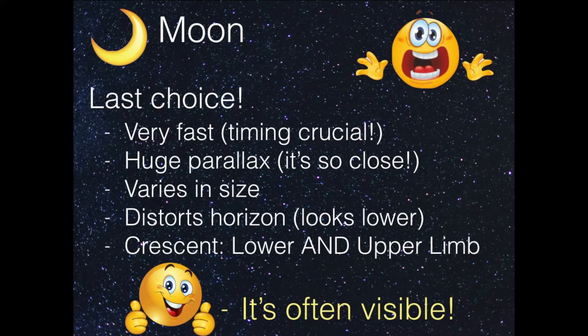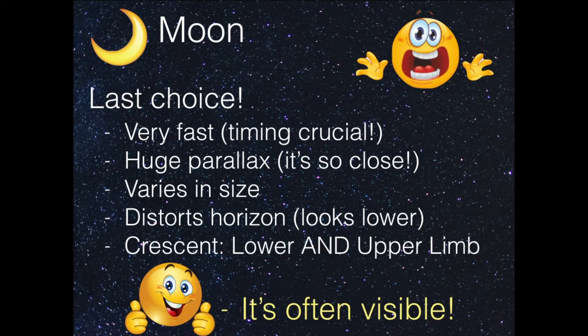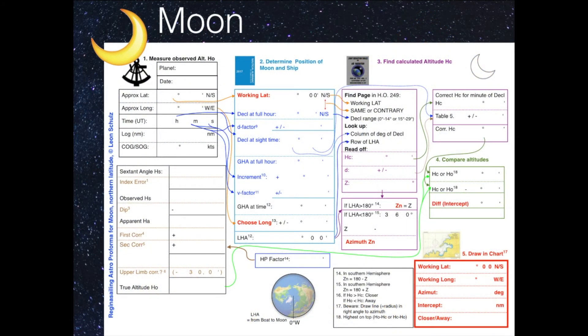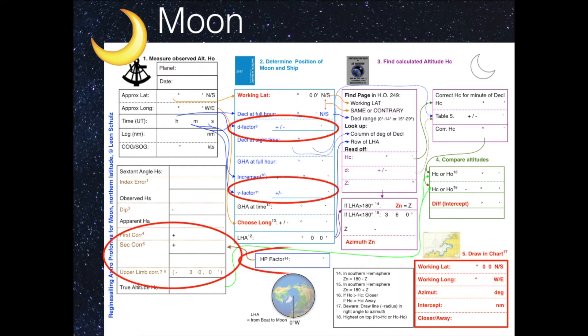So why not take the chance to shoot the moon as well? Because during daytime it's very often visible, and it's not difficult — not much different. I have made a special template for the moon. It looks like the template for the sun and for the planets since it's in our solar system, quite similar, but it has a couple of differences — here we have to do some more corrections.